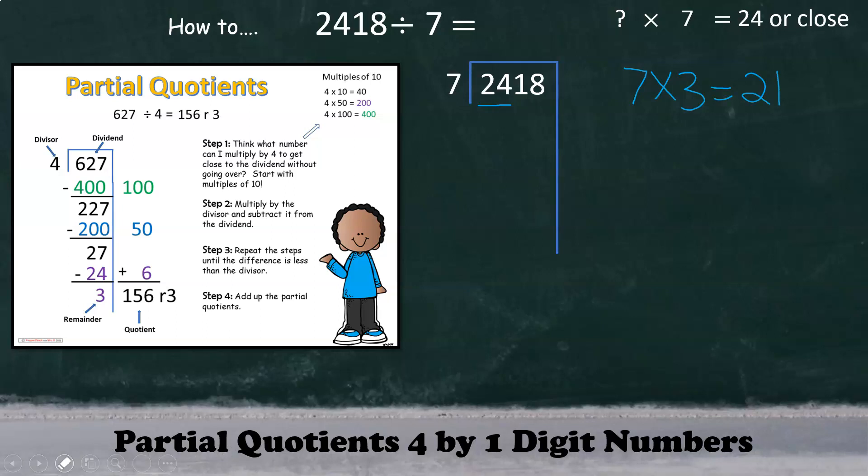I will need to compensate for that. If students were to reason that 7 times 30 could possibly be a partial quotient, they would notice once doing the computation that it equals only 210. Again, we have to get close to 2418. So then they should reason that 7 times 300 would be more appropriate, giving us a product of 2100, which is much closer to 2418. The partial quotient of 300 should be written right out here.